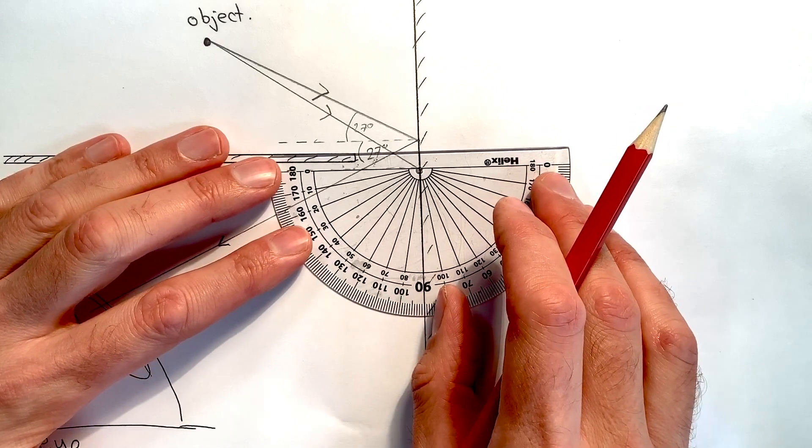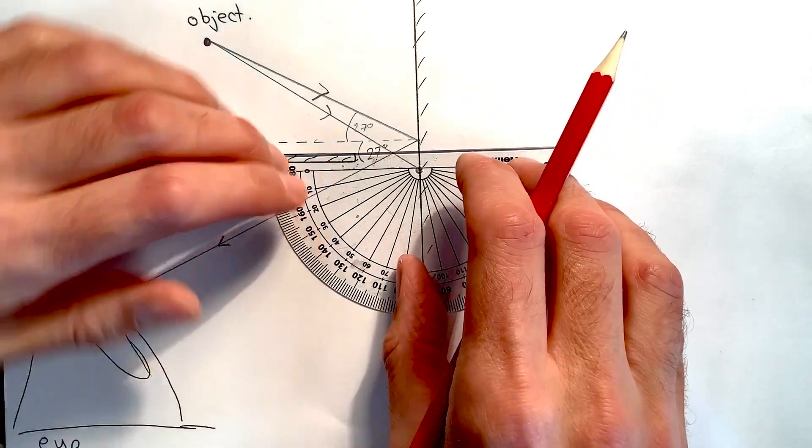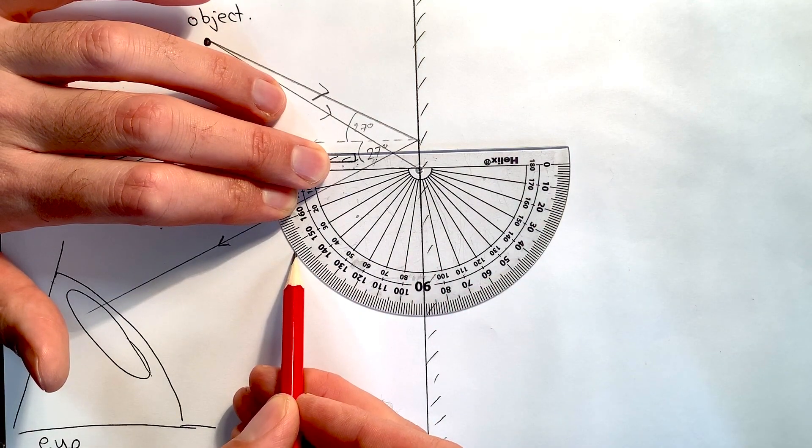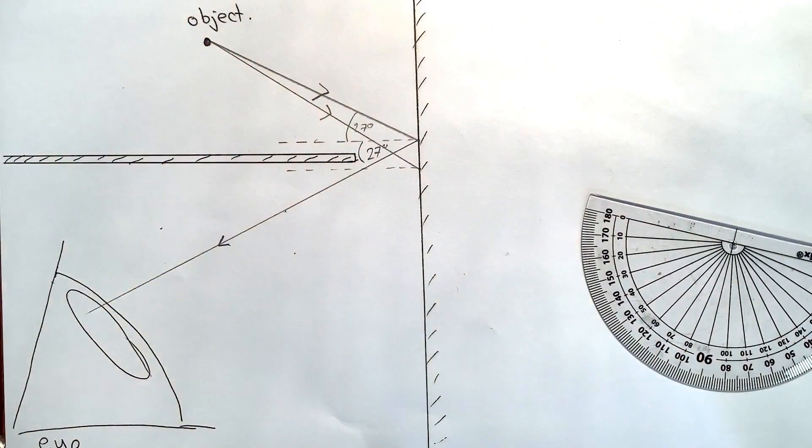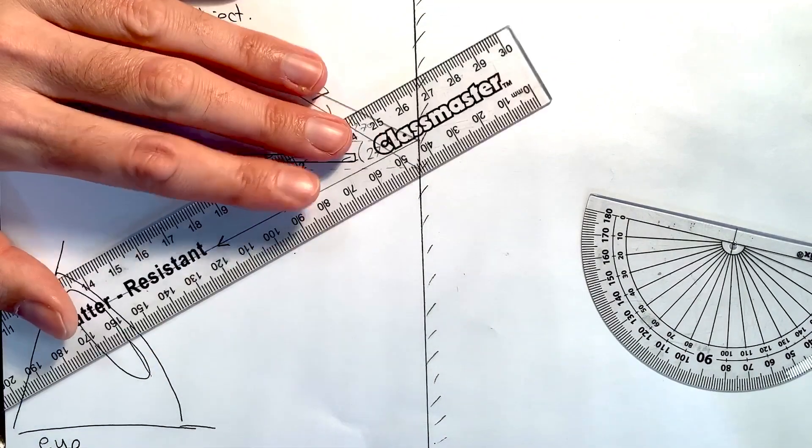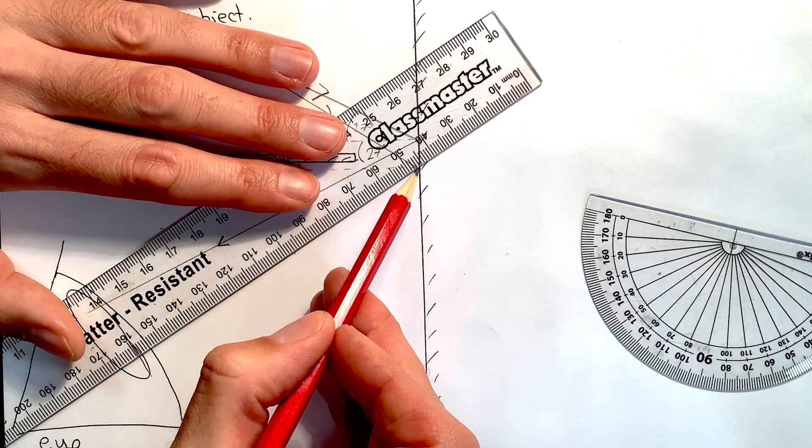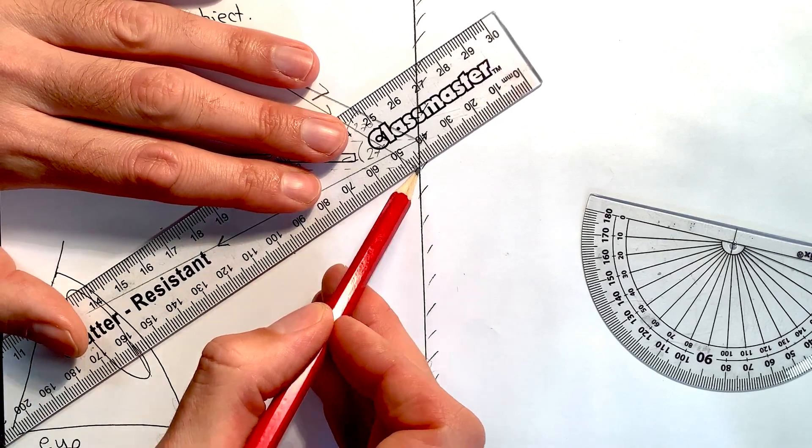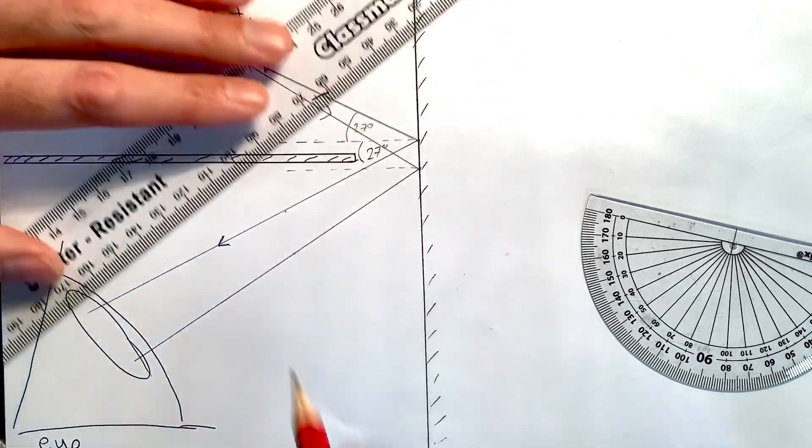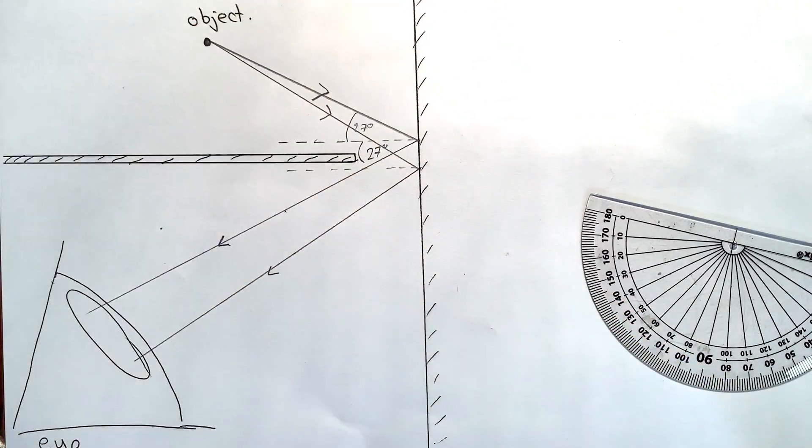So I need to rotate the protractor round, make sure it's carefully lined up, and measure my 33 degrees again, which is going to be there. And now I can draw in my reflected ray from where the incident ray hit and through this point here to give me my correct angle of reflection. And now I've got my second ray drawn in.